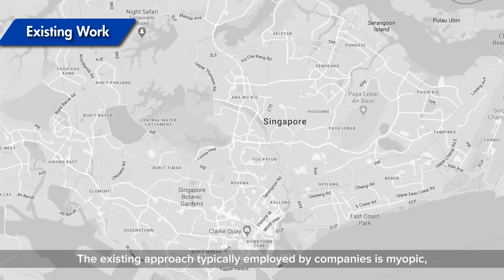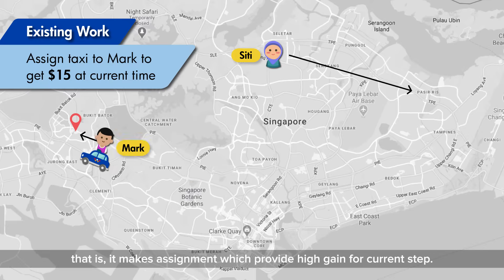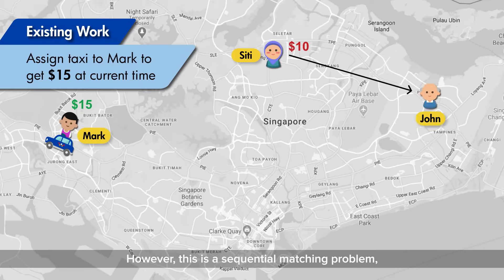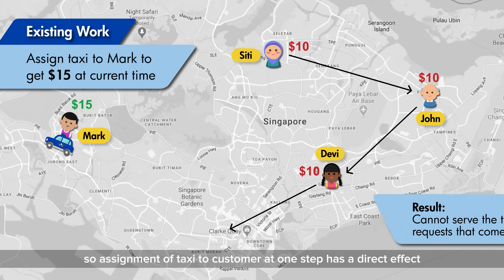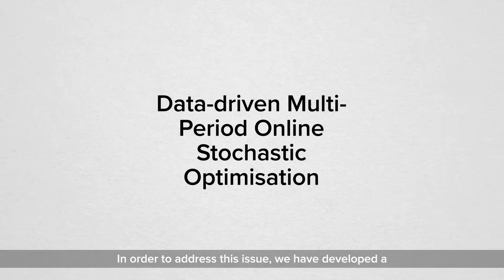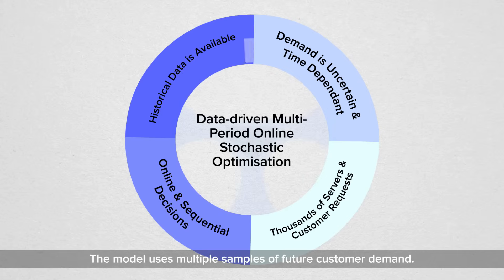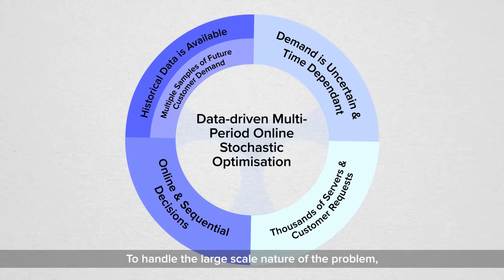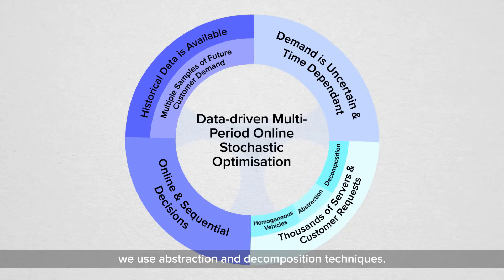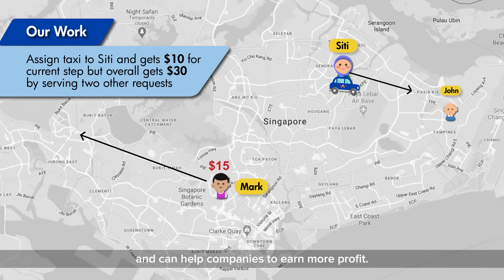The existing approach typically employed by companies is myopic — that is, it makes assignments without considering that assigning a taxi to a customer at one step has a direct effect on which customers can be served at future steps. To address this, we developed a data-driven multi-period online stochastic optimization model. The model uses multiple samples of future customer demand and employs abstraction and decomposition techniques to handle the large-scale nature of the problem. Our solution maximizes long-term gain and can help companies earn more profit.